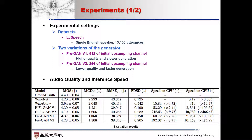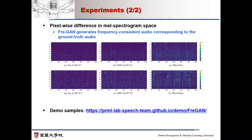We conducted experiments based on two variations of the generator. V1 used 512 initial upsample channels, whereas V2 used 256. We assessed FrGAN on various metrics. Above all, FrGAN V1 showed similarity to ground-truth audio with a gap of only 0.03 MOS. Moreover, we visualized the mel spectrum difference between generated and ground-truth audio. As can be seen, FrGAN reproduced the desired spectral distribution.